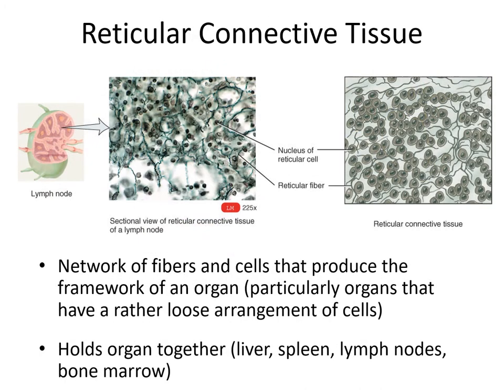Our last loose connective tissue is reticular connective tissue. What you're seeing here is a slide and diagram of the situation in lymph nodes, which are rather soft tissues. Lymph fluid flows through like a filter, and this filter contains cells strapped onto a scaffold of reticular fibers. Lymph nodes and other soft organs like the liver, spleen, and bone marrow contain this scaffold of reticular proteins because the cells themselves are not rigidly attached to each other.